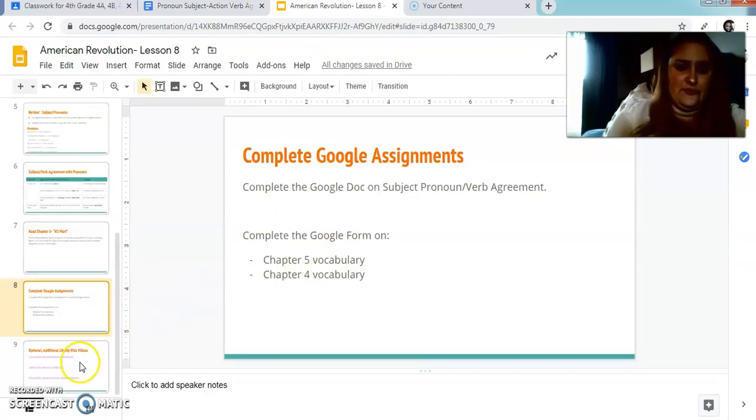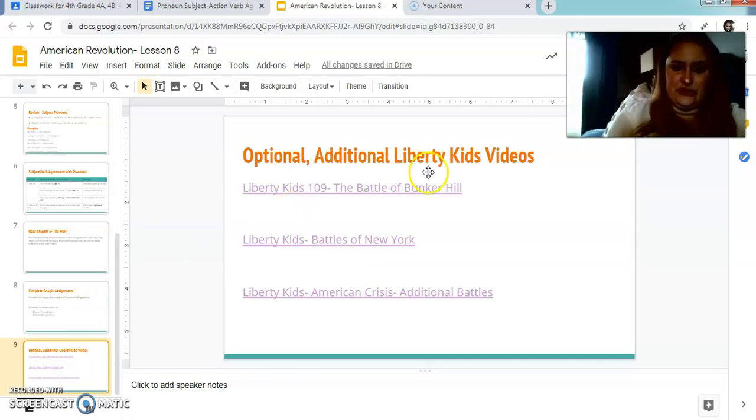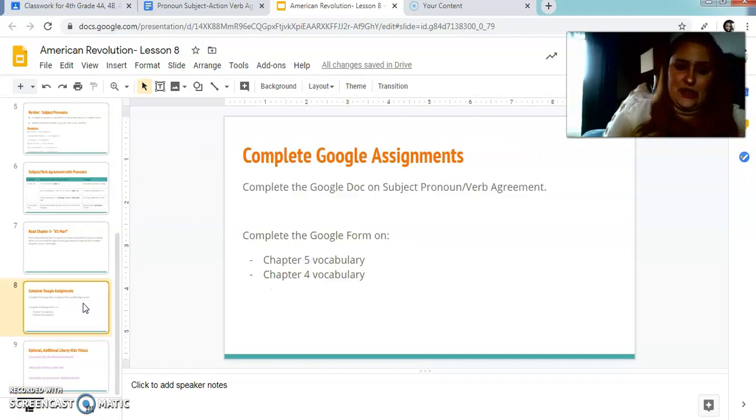Then you are going to complete the Google form using chapter five and chapter four vocabulary. It's literally all on vocabulary. And I gave you additional Liberty Kids videos if you want to watch them. So these are just in between the videos for tomorrow and whatnot. So you don't have to watch these again, but they're optional. So make sure you're doing your best work. You'll only be entered into the pizza raffle if you are completing everything, including the Google doc and the Google form to the best of your ability.